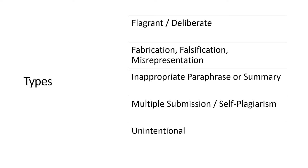Most often, however, plagiarism occurs when you inappropriately paraphrase or summarize someone else's work. This usually occurs when you forget to include a citation or attribution. You can also plagiarize your own work. This occurs when you submit the same material more than once, usually to different classes, or when you take work you've previously done and use it in something new without proper citation.